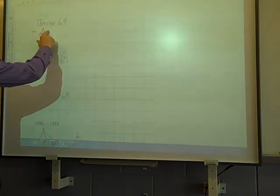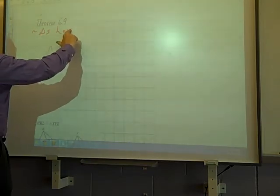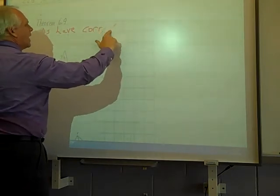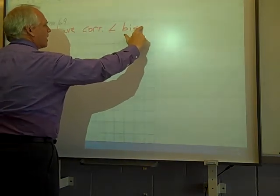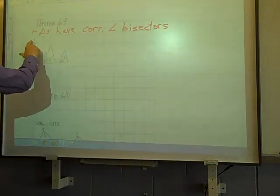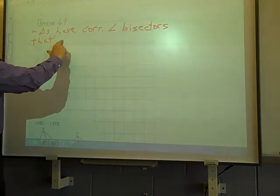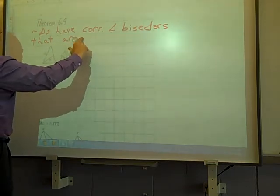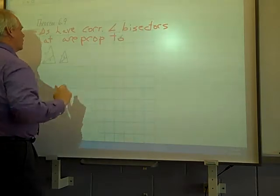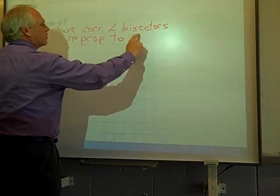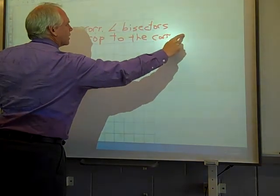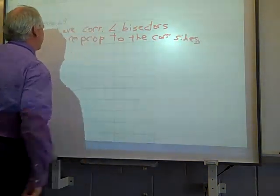Similar triangles have corresponding angle bisectors. The angle bisectors work here that are proportional to the corresponding sides.